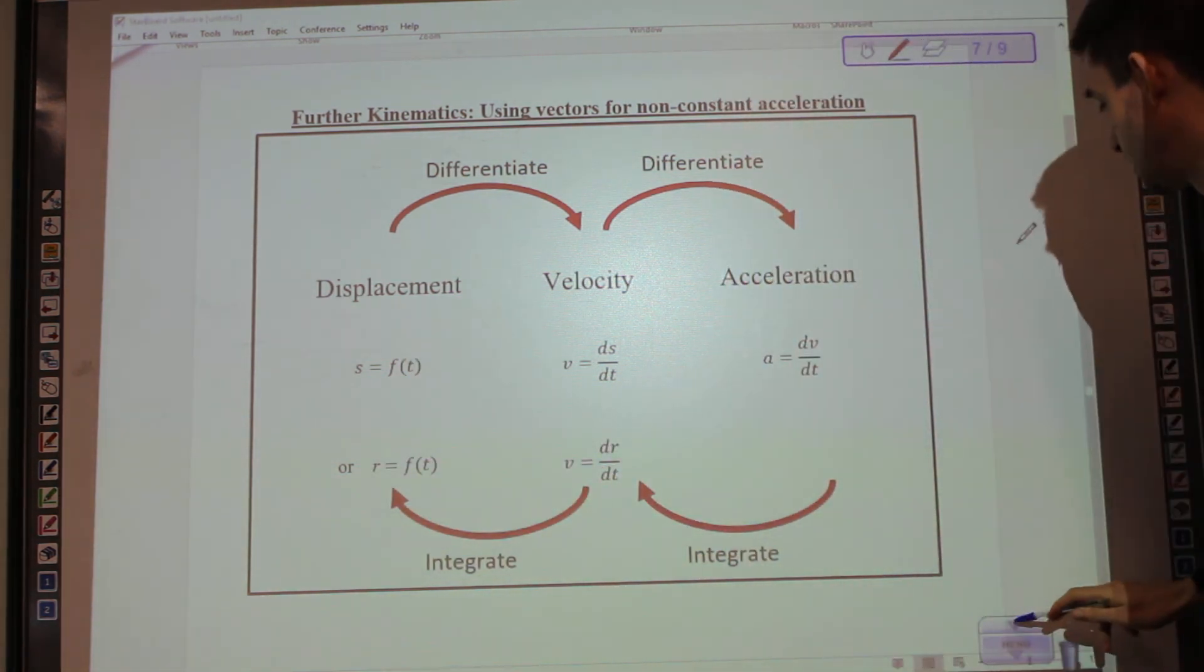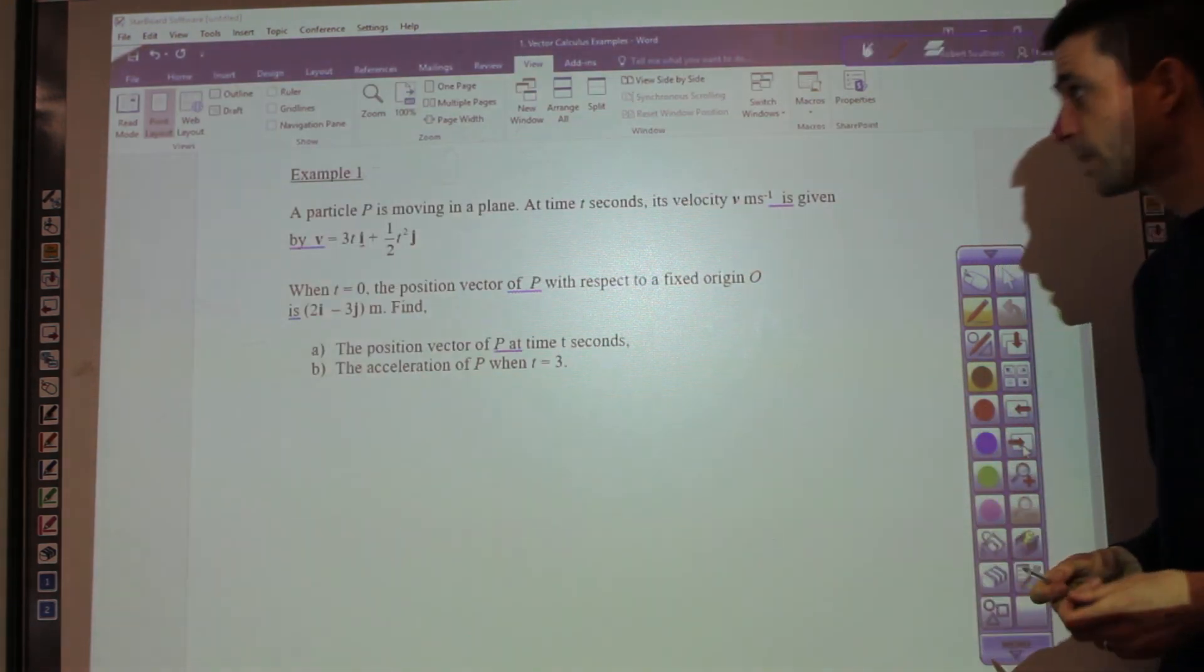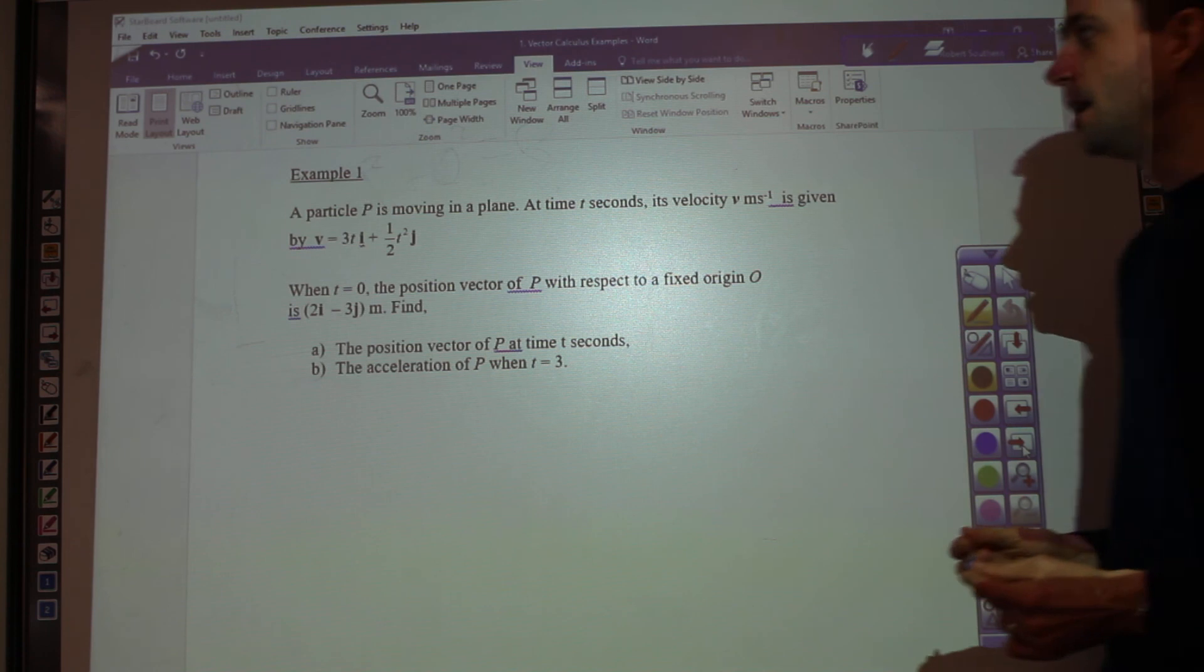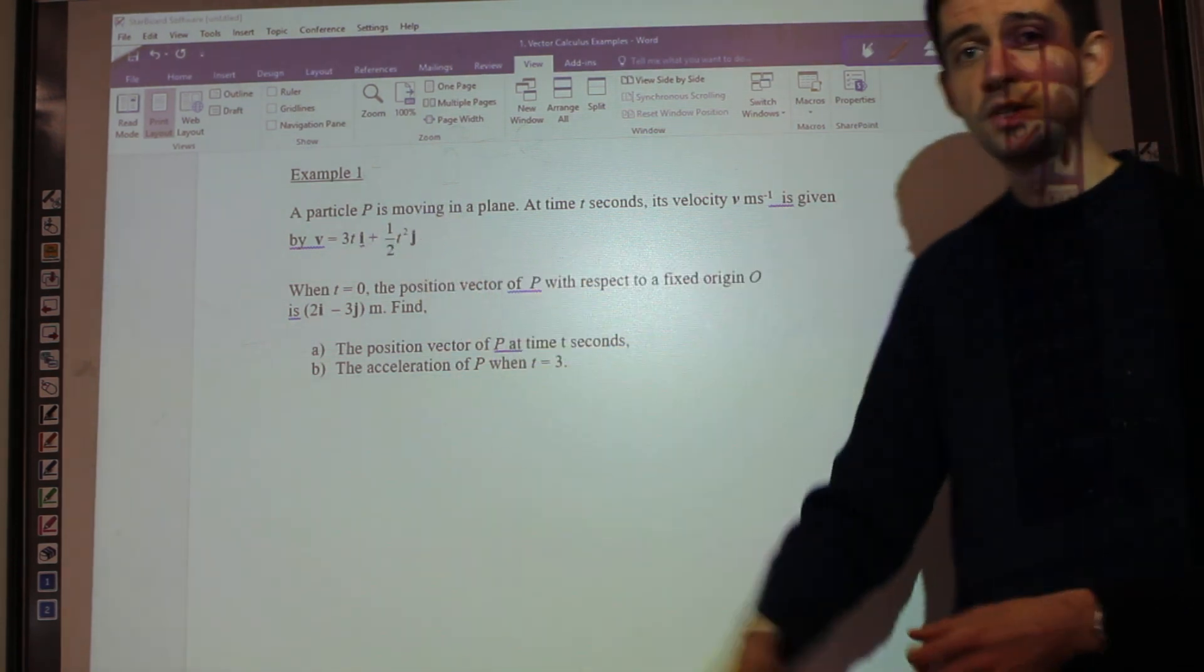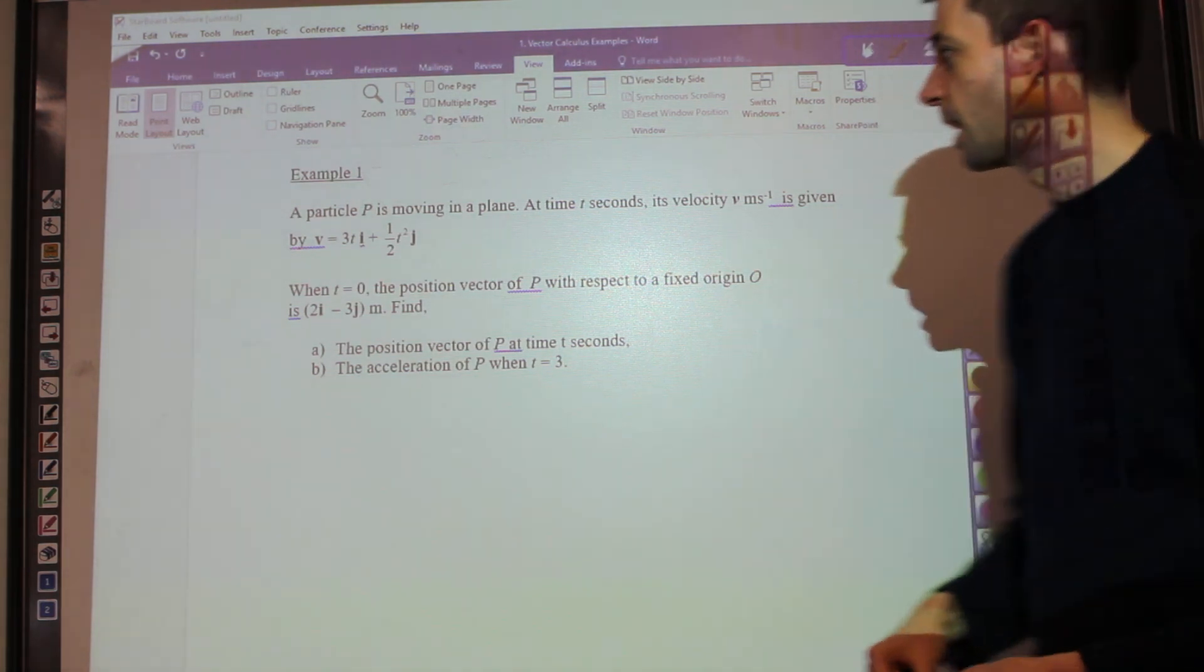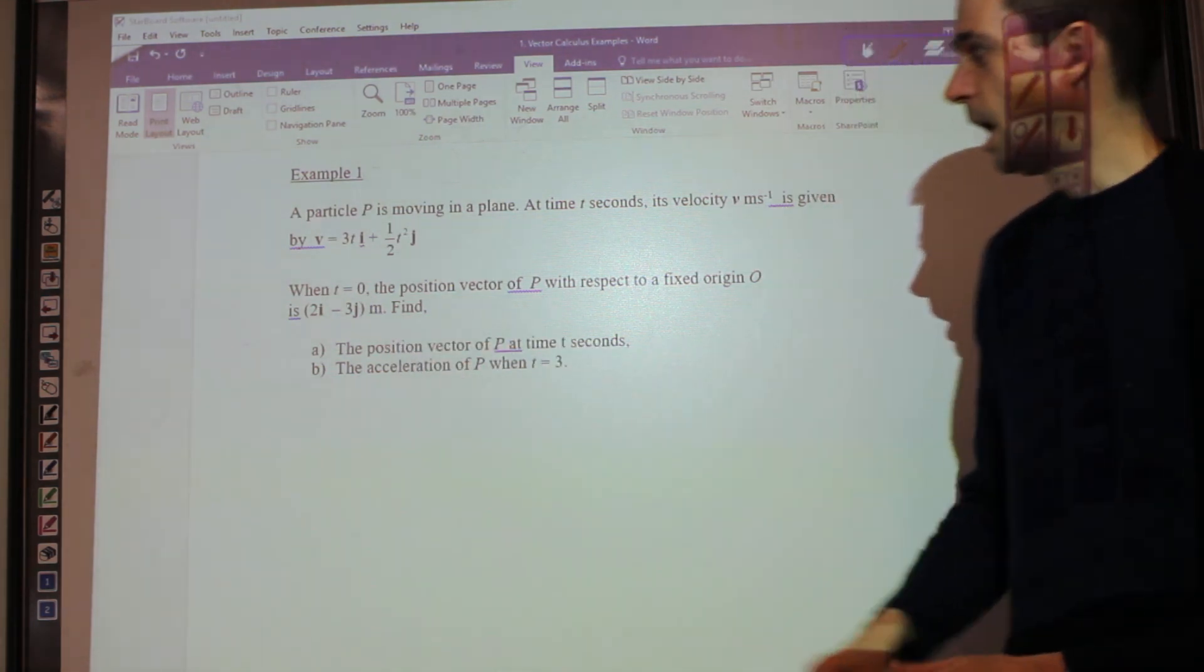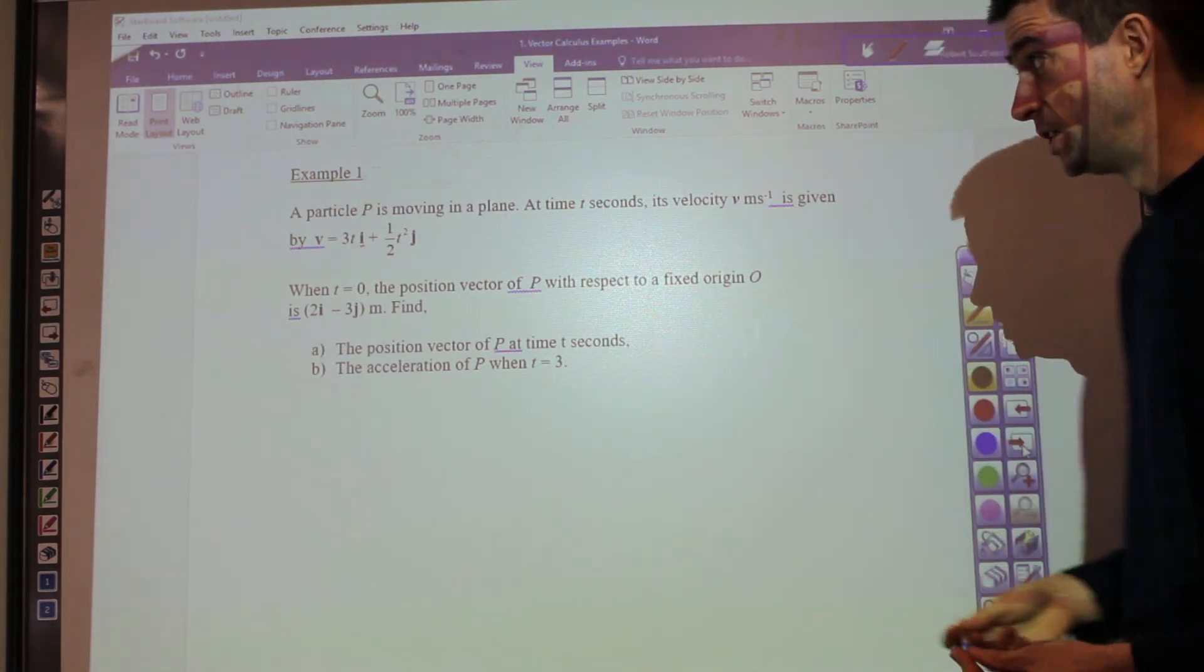So we're going to move on at a decent pace and we're just going to look at an example of how to apply this in vector form. So this is example one. A particle is moving in a plane. At time t seconds, its velocity is v meters per second, given by v equals 3ti plus a half t squared j. And what you'll notice is we've got separate i and j components because we're now dealing in vectors, whereas the ones you've seen previously might just have been in terms of t. We're told that when t equals zero, the position vector of p with respect to a fixed origin, i.e. where it is, is 2i minus 3j. And we're asked to find the position vector of p at time t seconds and the acceleration of p when t equals 3.